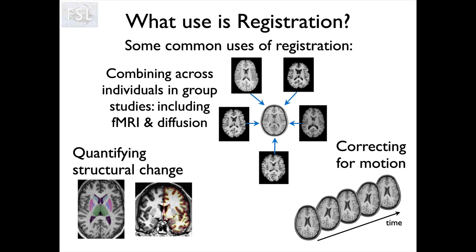Registration also lets us look at structure and anatomy, and try to quantify what is in the anatomy and how that might be changing either between different groups or over time within individuals. So we use registration for structural analysis, for diffusion analysis, and for functional analysis.